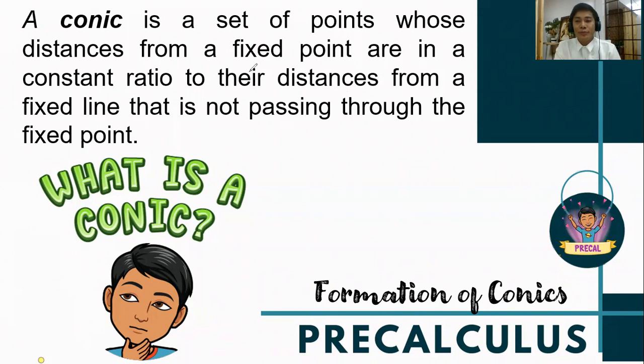As you observe in the definition, there are three important words that you should remember. We have the fixed point, the fixed line, and the distance between the two have a constant ratio. If a curve possesses these three characteristics, then that curve will be considered a conic in two dimensional form.